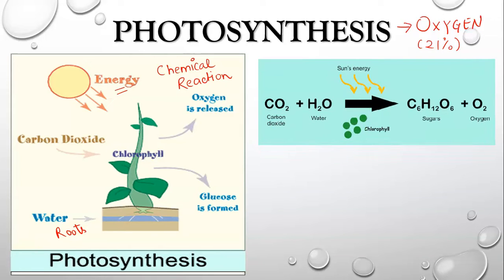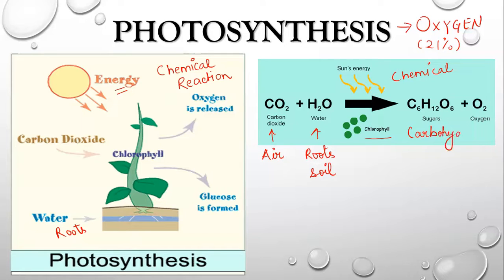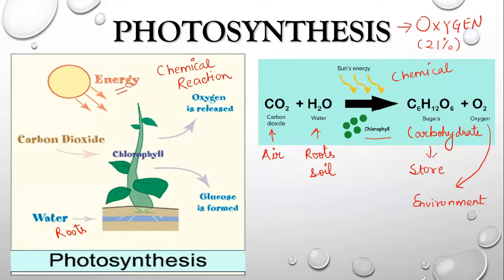In the photosynthesis reaction, carbon dioxide obtained from the air and water obtained from the roots or soil, in the presence of chlorophyll and sunlight energy, undergo a chemical reaction that produces carbohydrates (sugar) and oxygen. These carbohydrates are stored in various parts of the plant as an energy source to help them grow, while the oxygen is released into the environment enabling us to breathe.